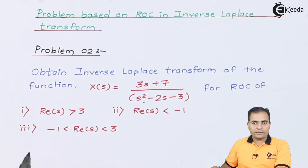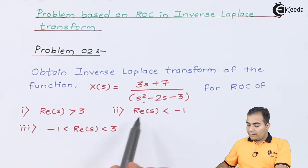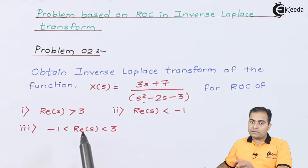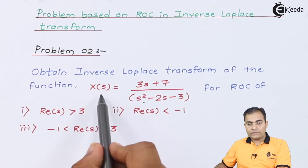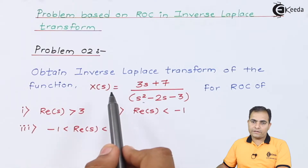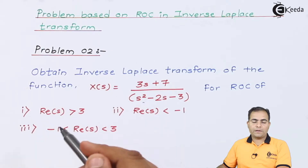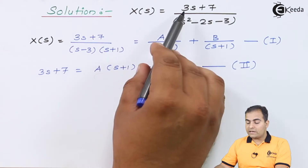Before calculating x(t) for all these ROCs, we first need to find the partial fraction of this expression. So we'll find the partial fraction first, and then move on to the inverse Laplace transform. The solution starts with X(s) = (3s + 7) / (s² - 2s - 3).